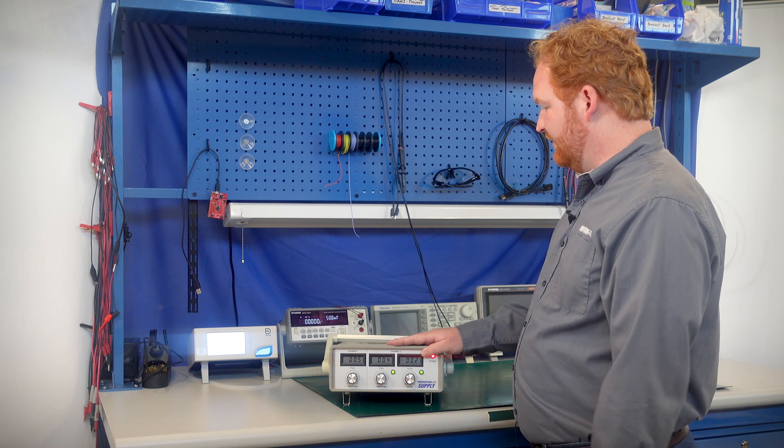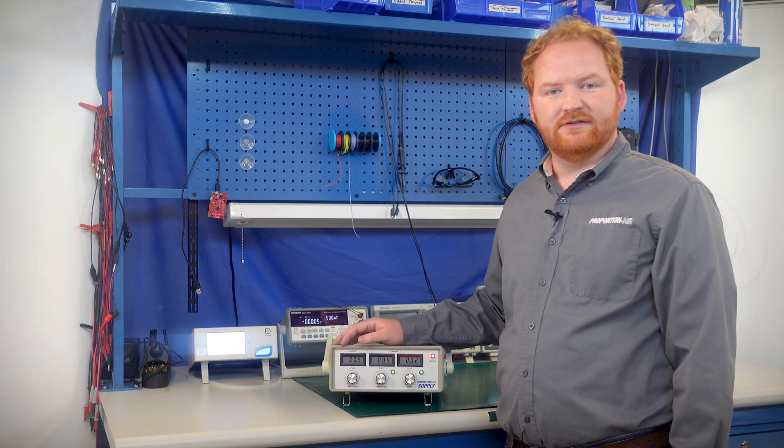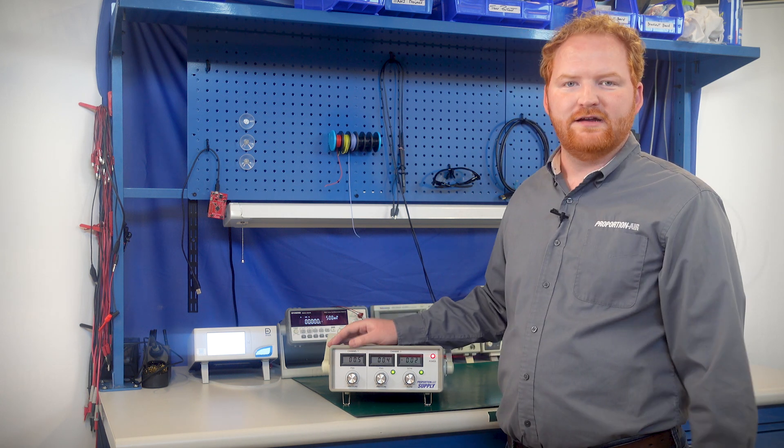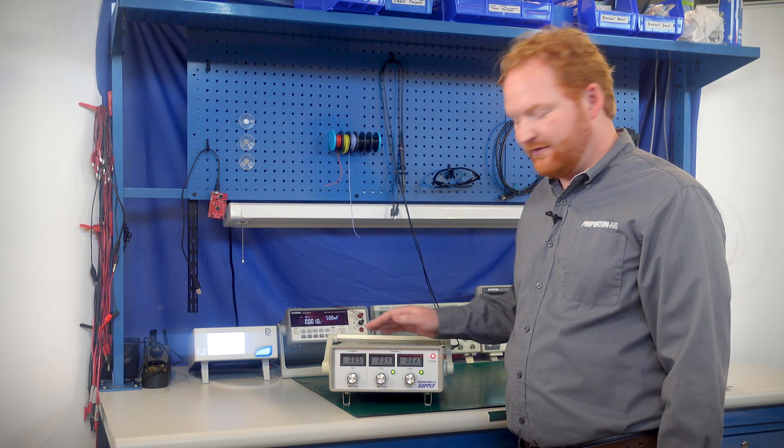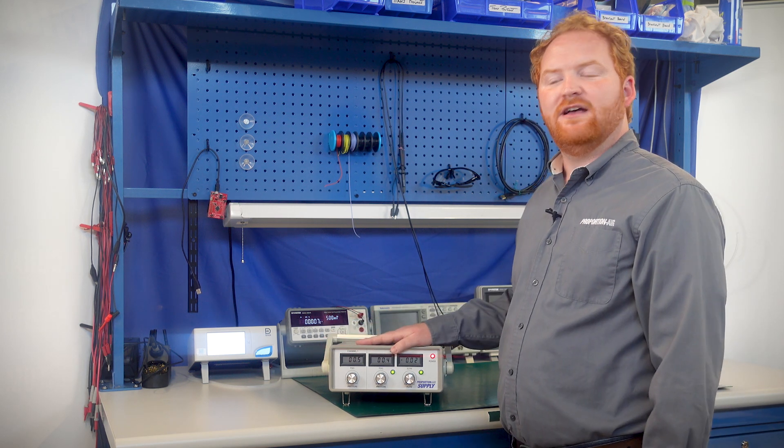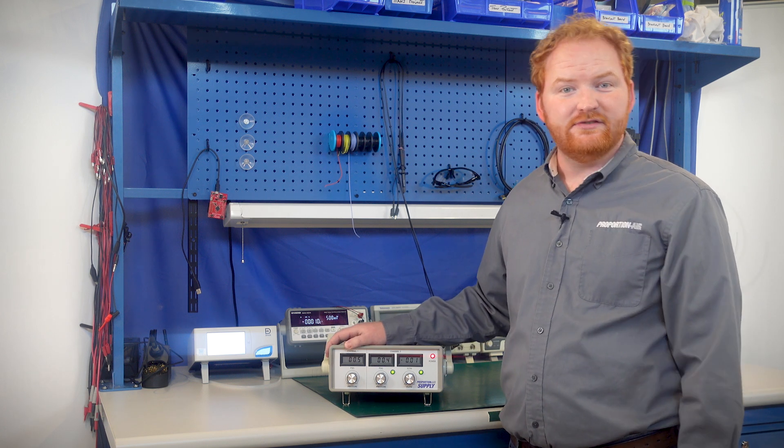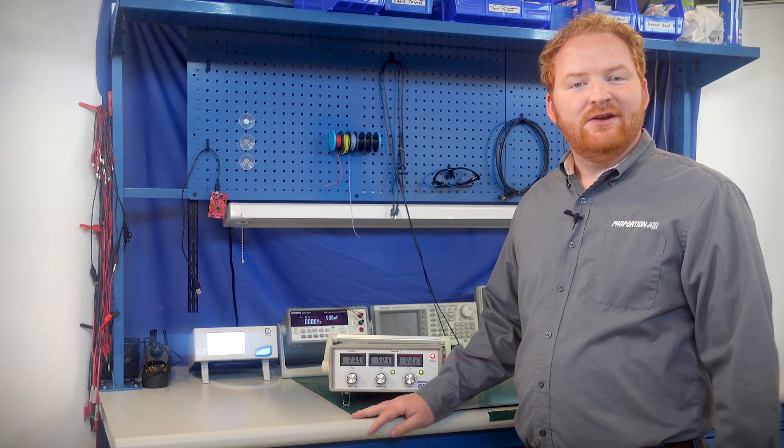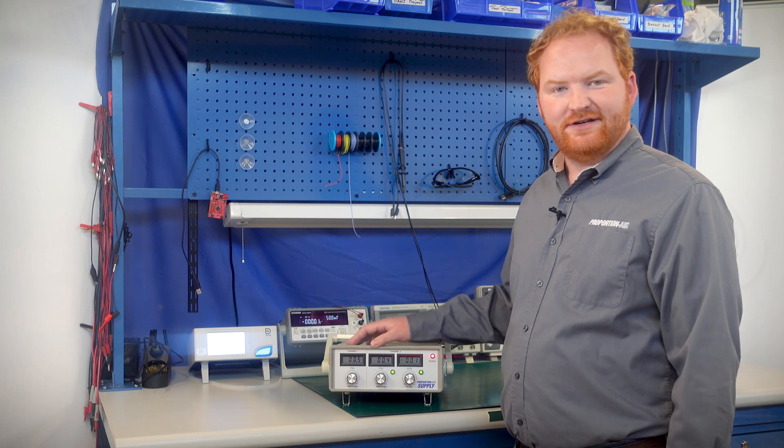Many times someone will have to do these functions and it will make a big mess on their bench - tubing and fittings and wires and regulators and controllers all over the place. Here it's all in one nice package that fits on your benchtop right alongside your function generators and oscilloscopes. Here we have a few demos to show the applications of the Proportion Air Supply.